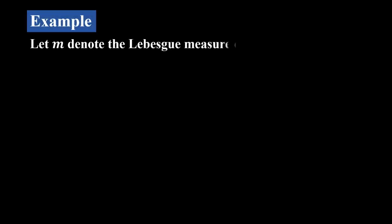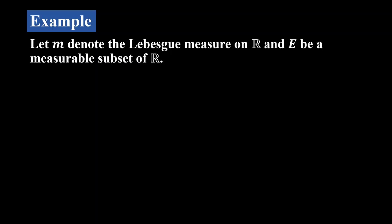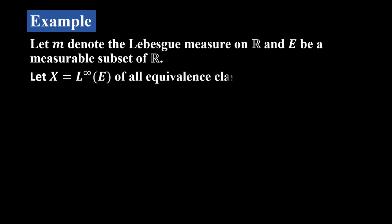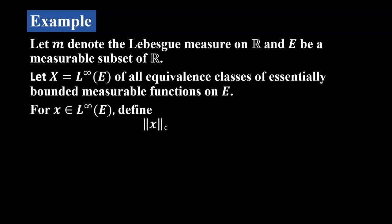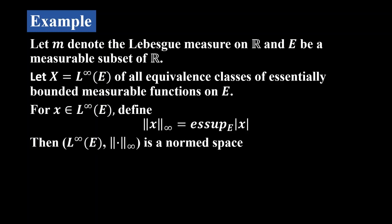Now consider the case p = ∞. Let M denote the Lebesgue measure on R, E be a measurable subset of R, and let L∞(E) be the set of all equivalent classes of essentially bounded measurable functions on E. For x ∈ L∞(E), we define ‖x‖_∞ as the essential supremum of |x| on E. We can easily verify that L∞(E) together with this norm is a normed space.